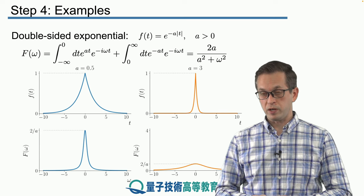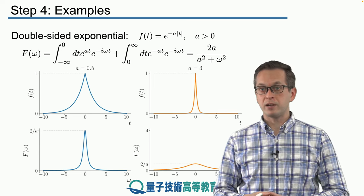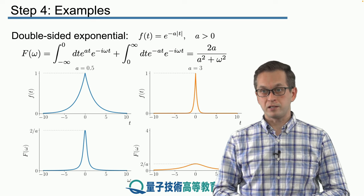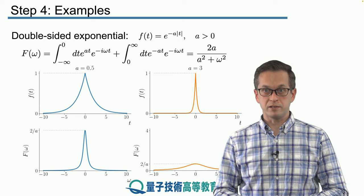not just the frequencies around omega equals to zero. And this is known as the uncertainty principle, which we will see time and again in quantum mechanics as well. But here, this example demonstrates that this happens also in classical signal processing.